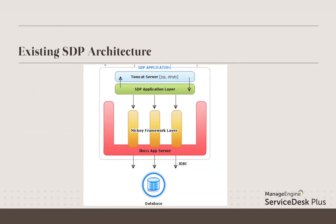ServiceDisplus consists of multiple components. It has the Tomcat web server through which users can access web pages via the HTTP protocol. Then comes the application layer — for example, when a user logs into the application, we need to show the data they are supposed to see and apply permissions as per the configured settings. That logic is handled in the application layer.